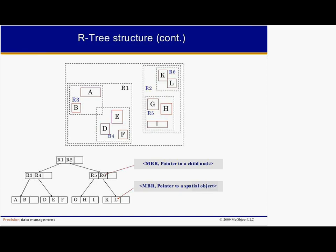To insert an object, the tree is traversed recursively from the root node. All rectangles in the current internal node are examined. The constraint of least coverage is employed to insert an object — in other words, the box that needs the least enlargement to enclose the new object is selected. In the case where more than one rectangle meets this criteria, the one with the smallest area is chosen. Inserting continues recursively in the chosen node. Once a leaf node is reached, a straightforward insertion is made if the leaf is not full. If a leaf node is full, it has to be split before the insertion is made. A few splitting algorithms have been proposed for good R-Tree performance, but that's more detailed than we have time to cover in this presentation.